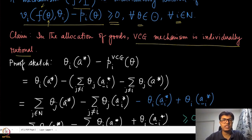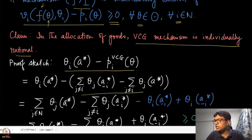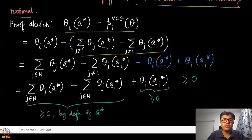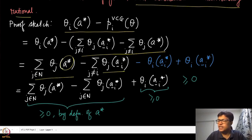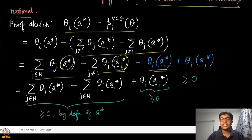What we need to prove is that the utility for every agent is non-negative. Pick an arbitrary agent i and look at its utility. Expanding the payment formula, the first term is the sum of values of all agents at the efficient allocation A-star, and the second term is the sum of all agents except agent i at the optimal allocation excluding agent i, A-minus-i-star. We apply the same trick as before: add and subtract theta_i of A-minus-i-star, where A-minus-i-star still lives in set A with the i-th component identically equal to null.